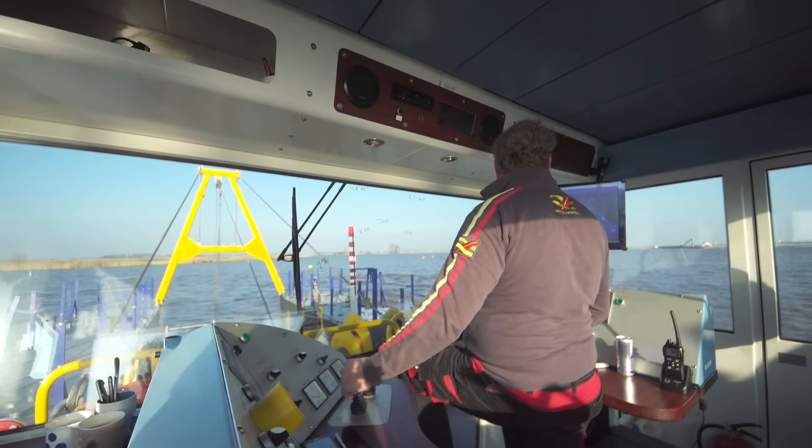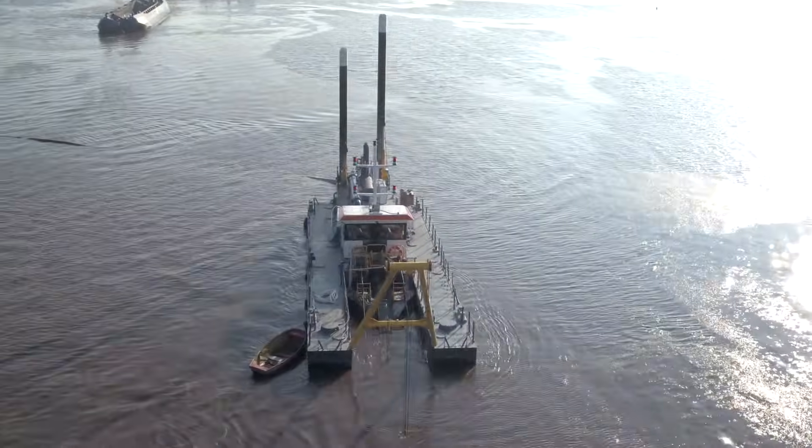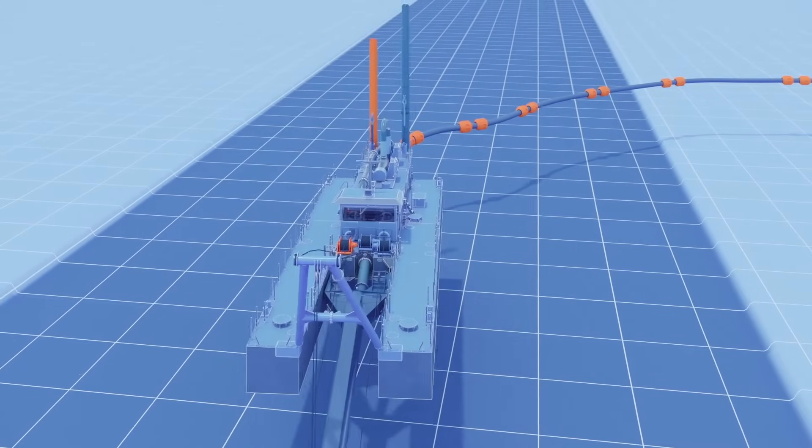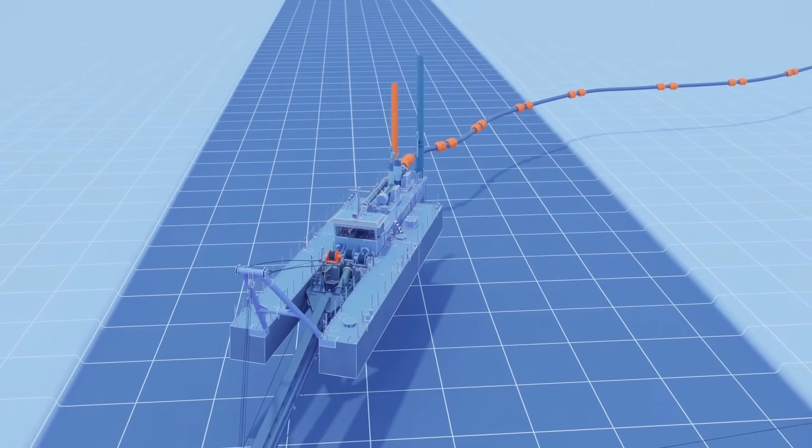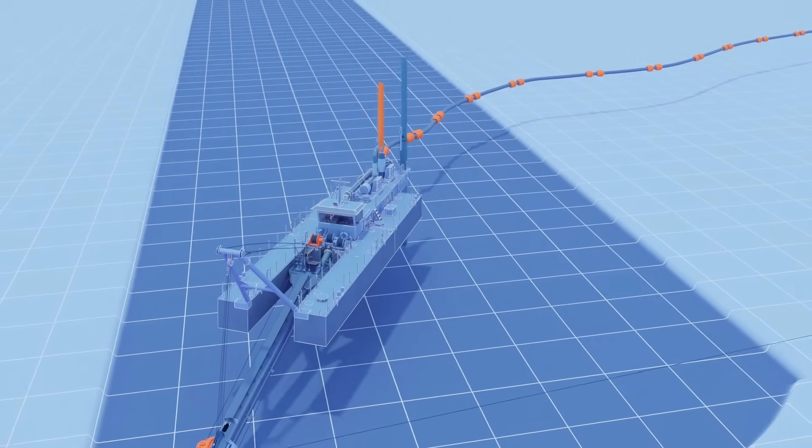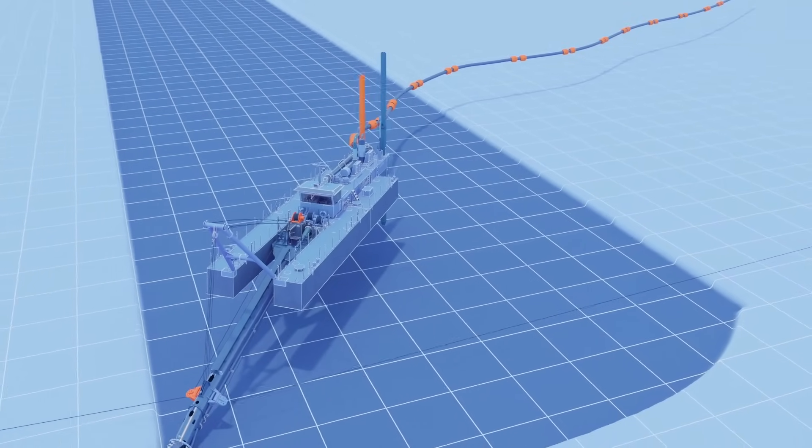The dredger is anchored on port and starboard. But contrary to normal anchors, these are not meant to keep the vessel still, but to move it from side to side. By controlling the side wire winches, the dredger swings from side to side, dredging the bottom without missing a spot.